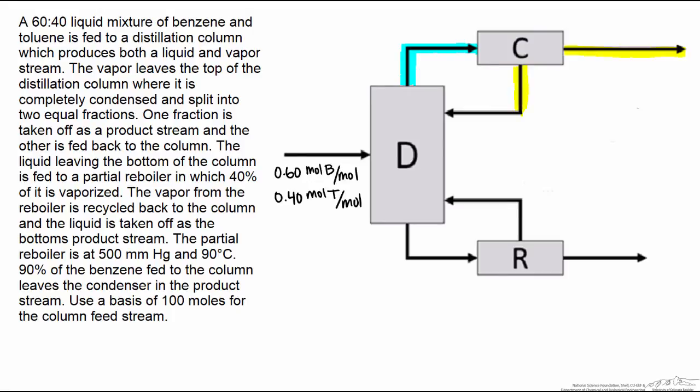Now the liquid leaving the bottom of the column is fed to a partial reboiler. So here's our reboiler in which 40% of it is vaporized. So that piece of information is something that we're going to use later in our analysis. The vapor from the reboiler is recycled back to the column and here the liquid is taken off as the bottom product stream.